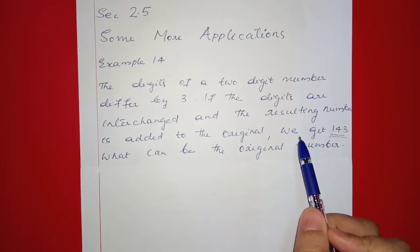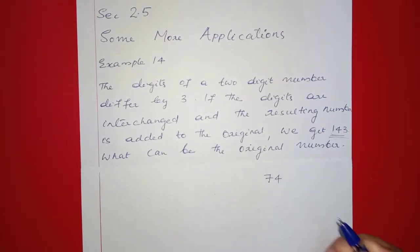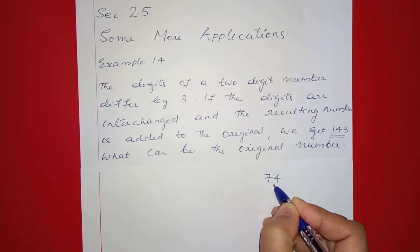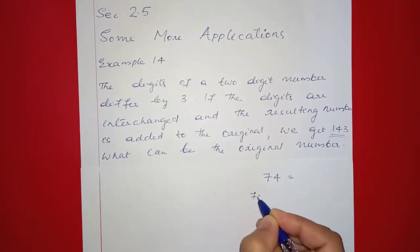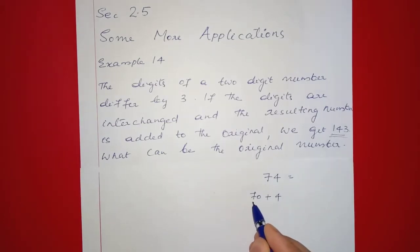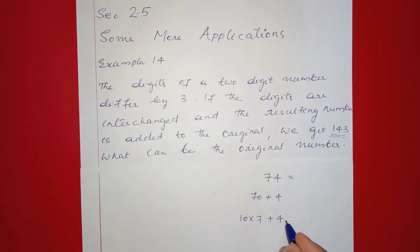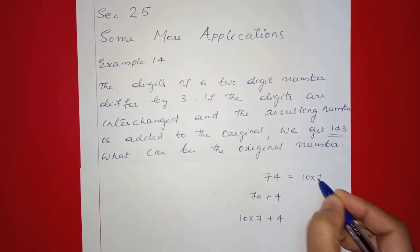This is a two-digit number. Let's take an example. Take the number 74. In the units place is 4 and in the tens place is 7. Using place value, 74 equals 70 plus 4, which is 10 into 7 plus 4. That means we multiply 10 by the digit in the tens place.